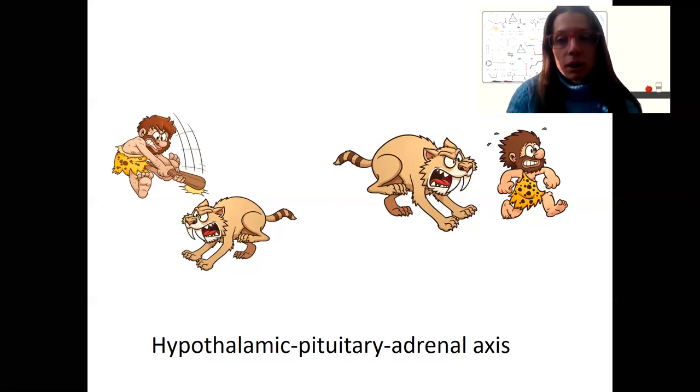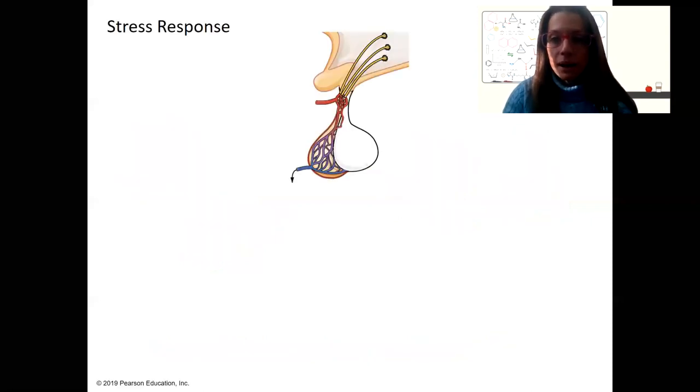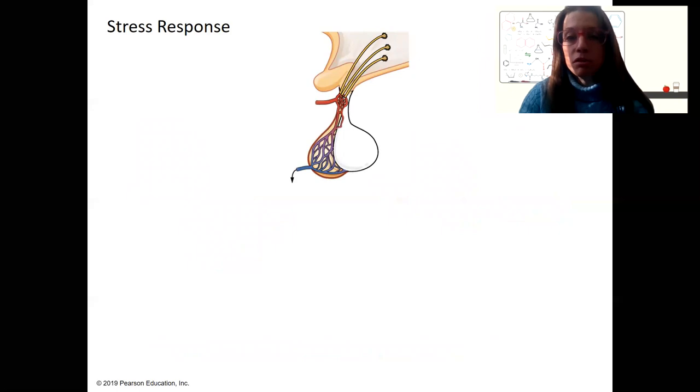So what I want to start with for the HPA axis, we're going to focus on the hypothalamic-pituitary-adrenal axis, which is hormones being released from the hypothalamus, releasing hormones, triggering a response. But I want to start first with an overview of the stress response because the hypothalamus controls the stress response in more than one way.